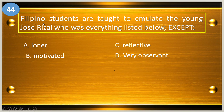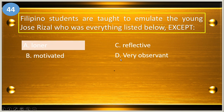Number forty-four: Philippine students are taught to emulate the young Jose Rizal who was everything listed below except — A, loner; B, motivated; C, reflective; and D, very observant. The answer is loner.